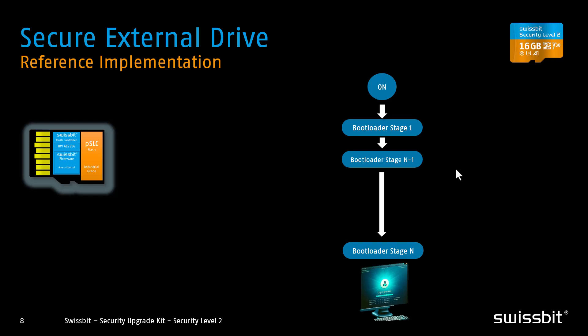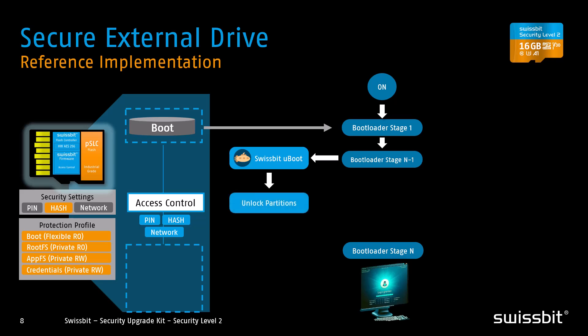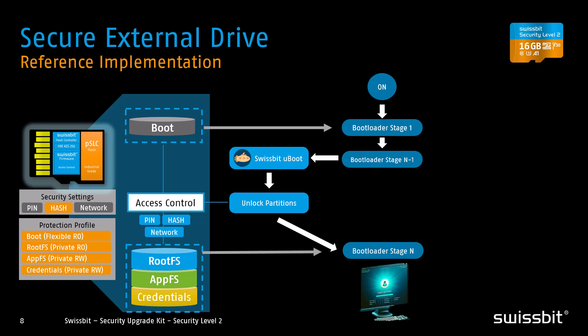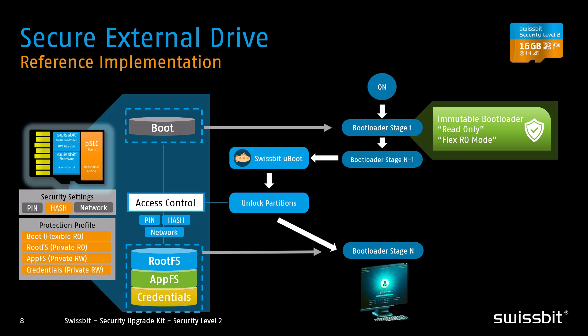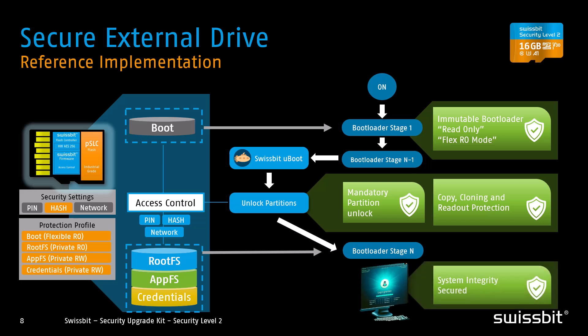Let's see how this works with the Raspberry Pi. Our Security Level 2 micro SD card is partitioned with four partitions, but only the boot partition is readable by default. Inside the boot partition is the Swissbit U-Boot bootloader, an open-source bootloader that communicates with the micro SD card using the ASSD protocol. After unlocking, the other partitions become accessible and the system can resume its normal boot. The system's integrity is protected because the bootloader is made immutable by our access control mechanism and cannot be altered. If unlocking fails, the data on the card remains secure and unreadable, protecting system integrity and ensuring confidentiality from unauthorized physical attacks.